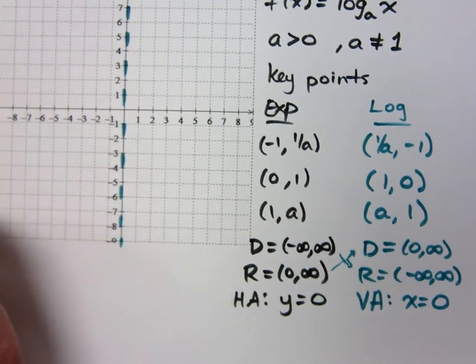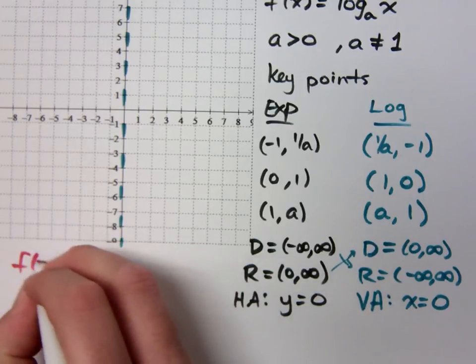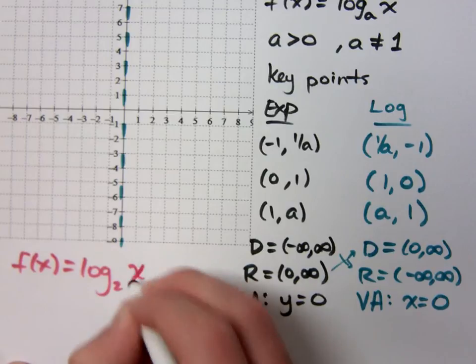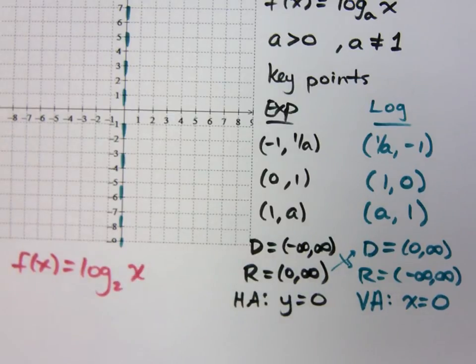So this is the connection we have between exponential and logarithmic functions. Now if we look at the very specific example of f of x equals log to the base 2 of x, let's find our key points based on a logarithmic function. What is my base? My base is 2, right?